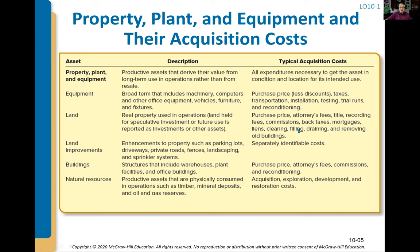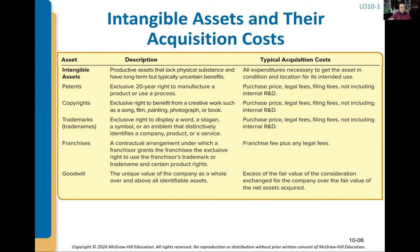There are a lot of different kinds of costs shown on this slide — land improvement, which we'll talk about separately. That's costs incurred after you buy land. Buildings include purchase price, commissions, and reconditioning — everything getting the building ready for initial use. Natural resources we'll talk about more later in the chapter.